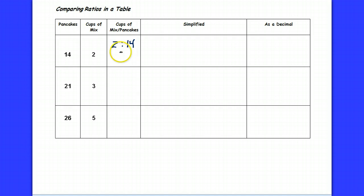Written as a fraction, that's 2 over 14. So the relationship between mix and pancakes is 2 over 14.